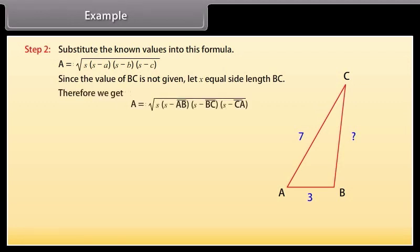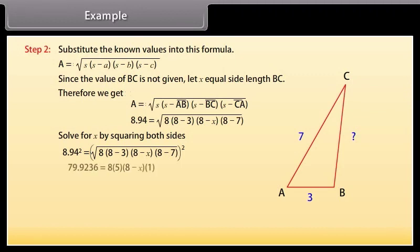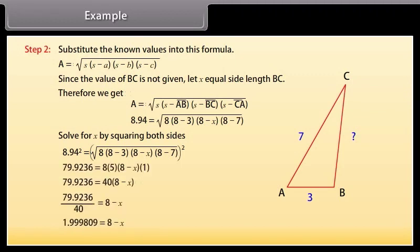Therefore, by substituting the values we get 8.94 = √(8 × (8−3) × (8−X) × (8−7)). Now solve for X by squaring both sides: 8.94² = 8 × 5 × (8−X) × 1. By calculating, we get X is approximately equal to 6.0.